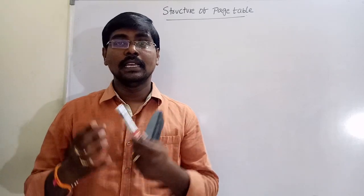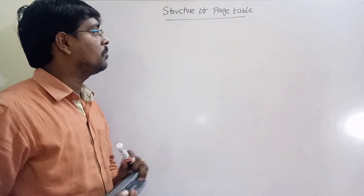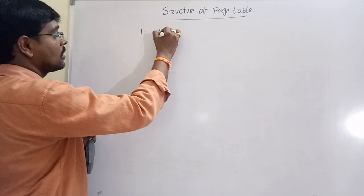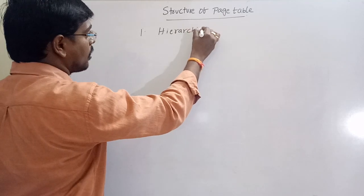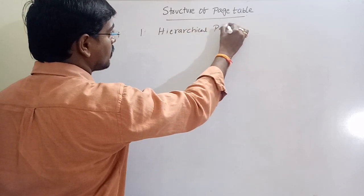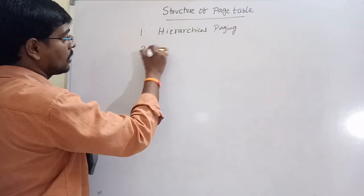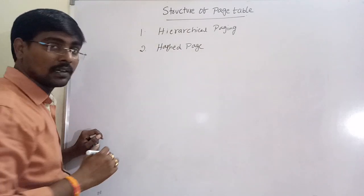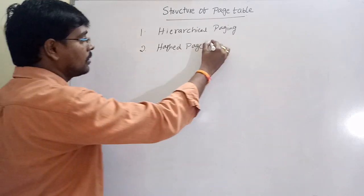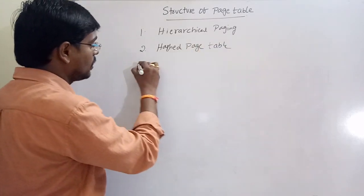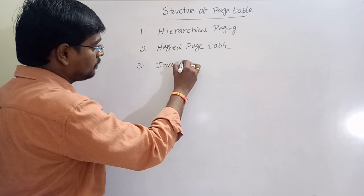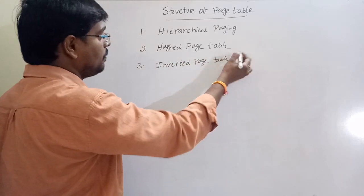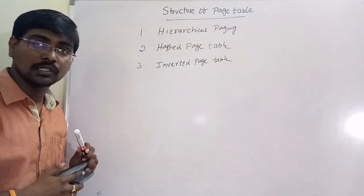Hi friends, welcome to Avachanath. In this session, we will discuss the structure of page tables. We have three types of structures: one is hierarchical paging, second one is hashed page table, and third one is inverted page table. These are the three variations of page tables.